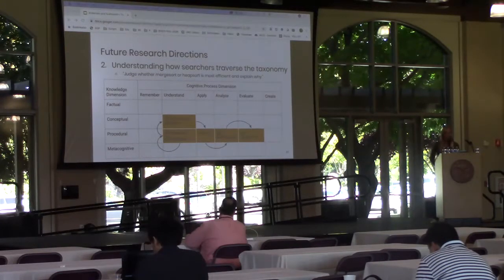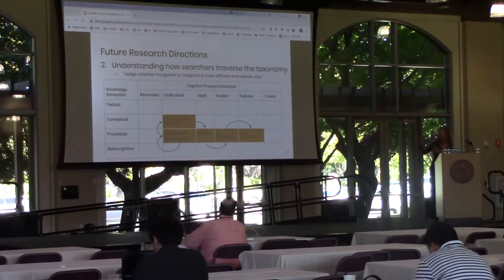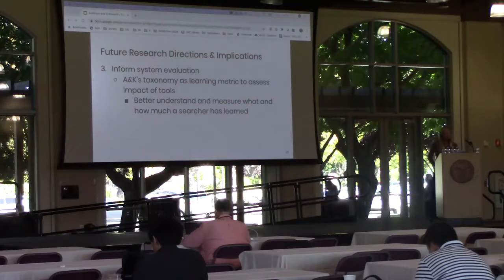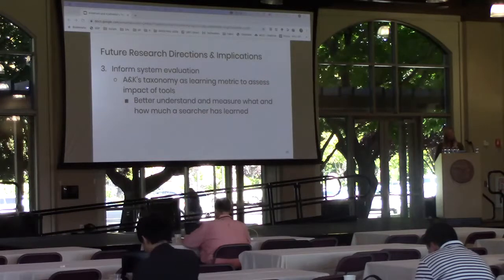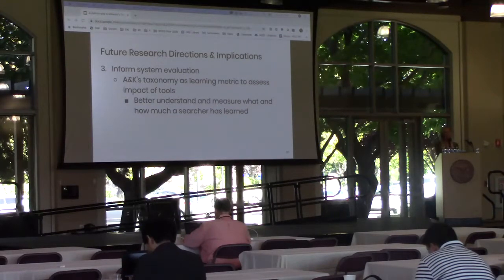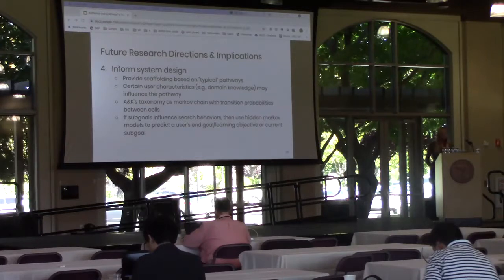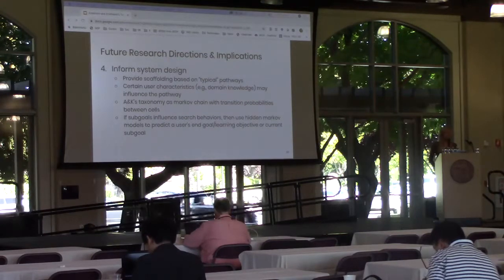In our pilot testing so far, we've been observing that participants have a tendency to start tasks with sub-goals associated with understand conceptual, which is interesting. Third, the taxonomy is useful for informing system evaluation — using a focused or distributed learning assessment metric will allow us to better understand what and how much a searcher has learned when comparing systems and the impact of tools. The taxonomy is also useful for informing system design; we could potentially develop a tool providing scaffolding or presentation of sub-goals for searchers given a common pathway for a particular learning objective.